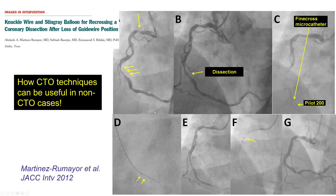Last but not least, the antegrade dissection reentry techniques can be extremely useful even in non-CTO intervention. This is an example of a right coronary PCI complicated by wire loss, dissection, and acute vessel closure. The wire could not be re-advanced into the true lumen; however, the wire was advanced sub-intimally. The Stingray was used to reenter into the distal true lumen, and then the vessel was stented successfully, restoring antegrade flow and providing a solution to this complication.